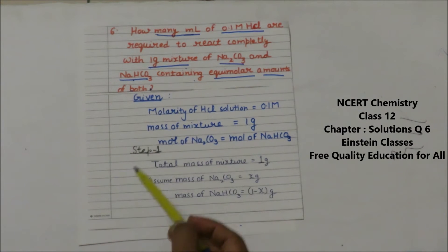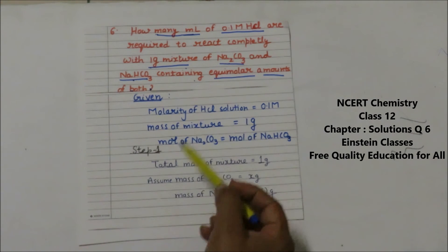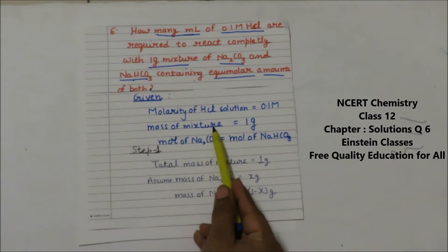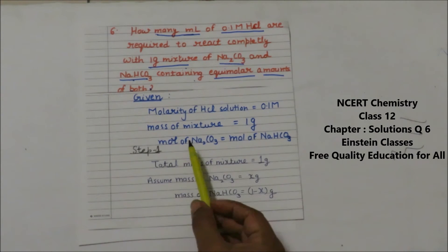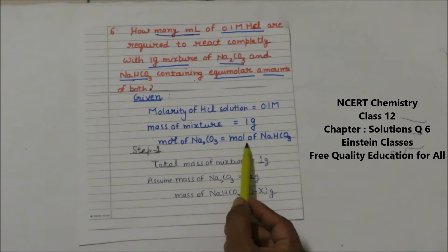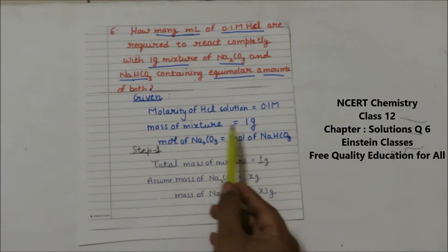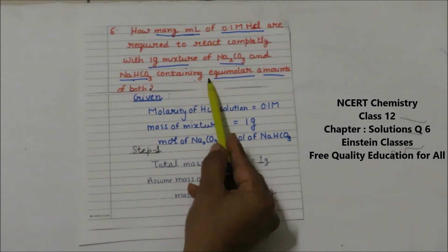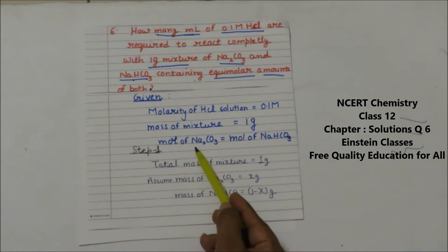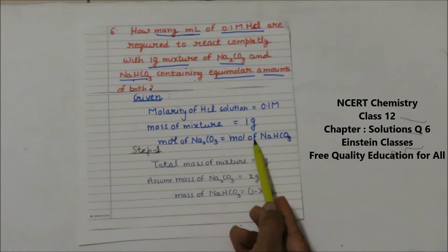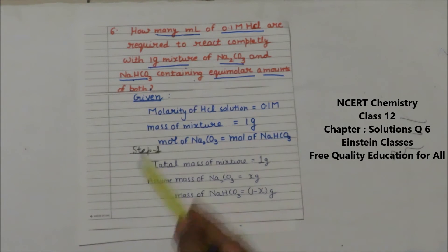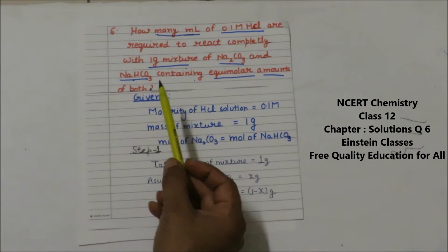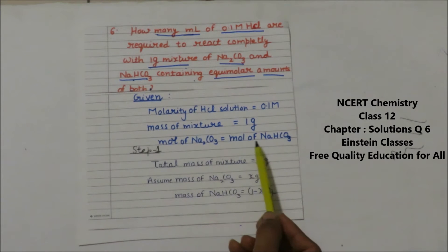What is given to us: the molarity of HCl solution is 0.1 molar, and the mass of the mixture is one gram — that mixture being Na₂CO₃ and NaHCO₃. The key condition is that the mixture contains equimolar amounts, meaning the moles of Na₂CO₃ and moles of NaHCO₃ in this mixture are the same.